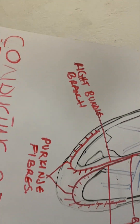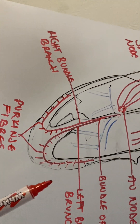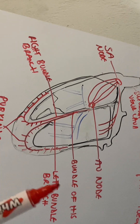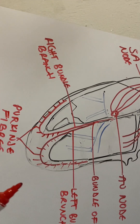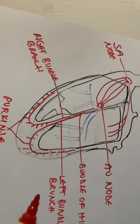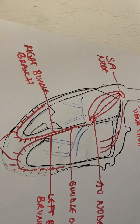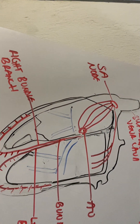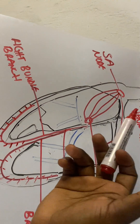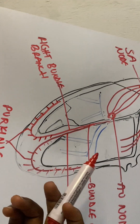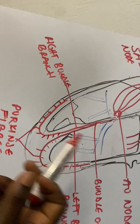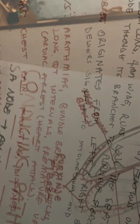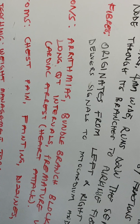So basically, this is the conducting pathway of the cardiac system, which leads to controlling our heartbeat and regulating how blood flows to various parts of our body. To summarize: signal comes from the SA node to the AV node, to the bundle of His, to the bundle branches, and then to the Purkinje fibers.